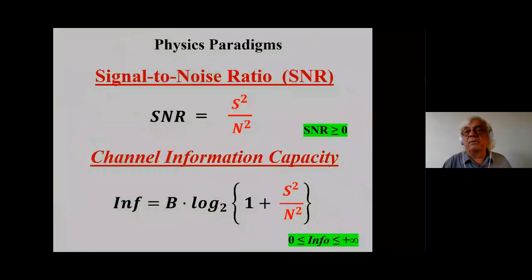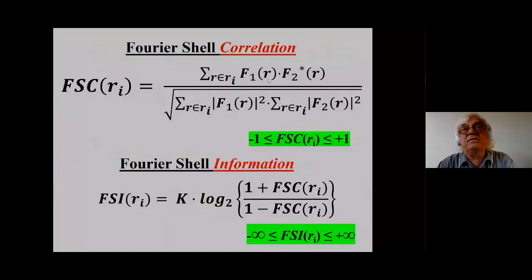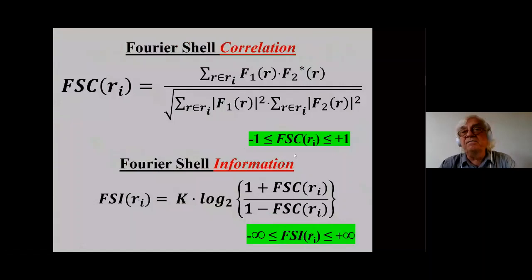So this is one story to keep in mind. The other story is that of the normalized cross-correlation, and that we can use the Fisher transform to spread that out over all reasonable values. In Fourier space, we can do the same. These Fourier shell correlation values are between minus one and plus one — but if we apply the Fisher transform here, we then have what we call the Fourier shell information. This goes from minus infinity to plus infinity and that solves many problems, as I will show you in a few examples.